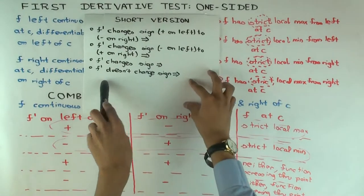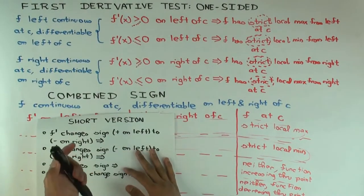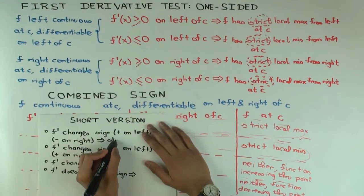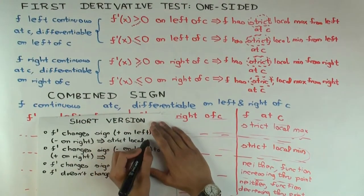Then you have a strict what? Local maximum. Strict local maximum. Two-sided strict local maximum at c.